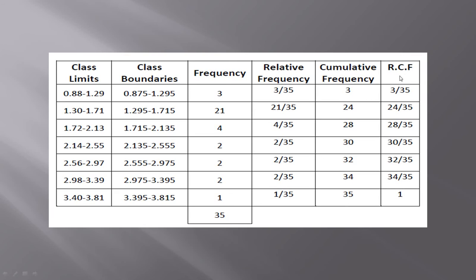Next is relative cumulative frequency, which I have denoted as RCF. Here you should divide the cumulative frequency by the total frequency. We know the total frequency is 35, and for the first class the cumulative frequency value is 3, so the RCF value is 3 over 35.